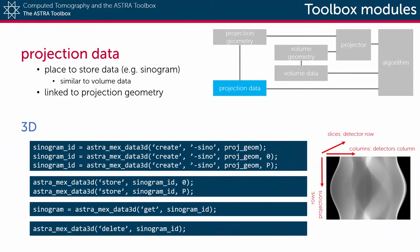For 3D data, the columns of the data correspond to the columns of the detector, and the slices correspond to the rows on the detector.